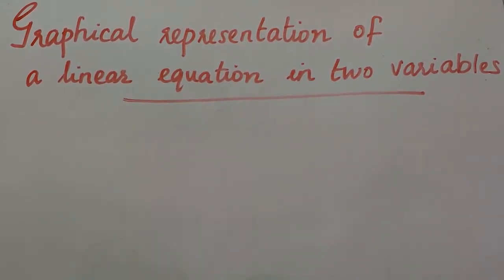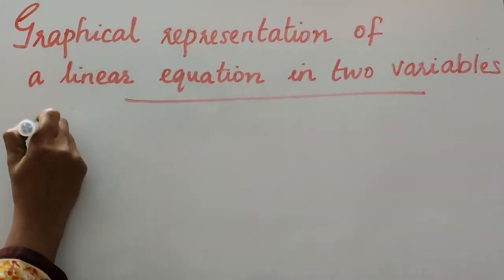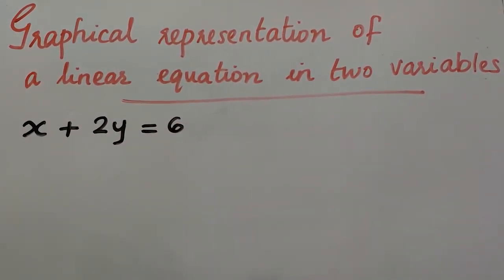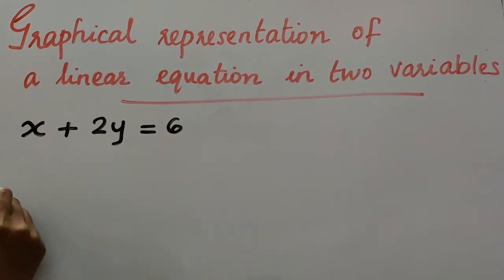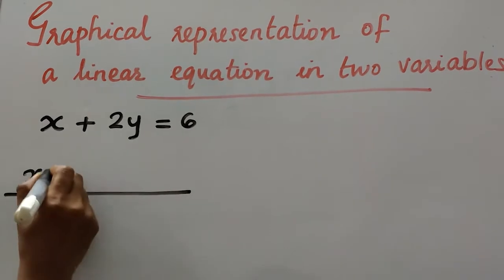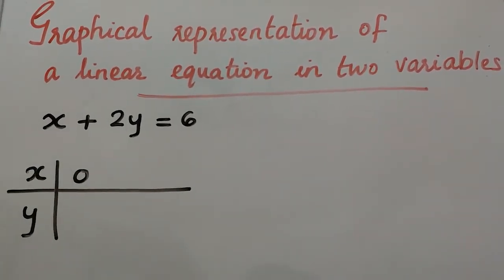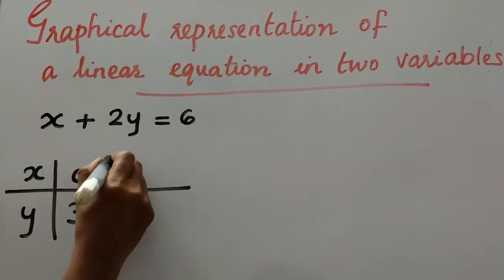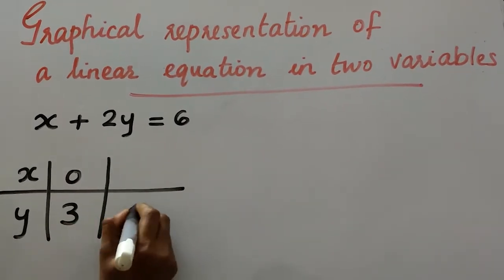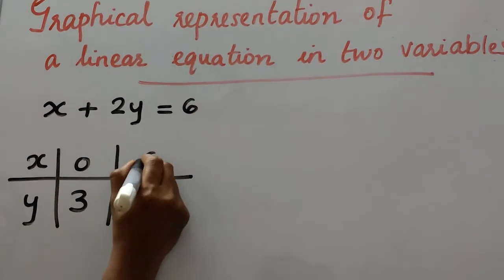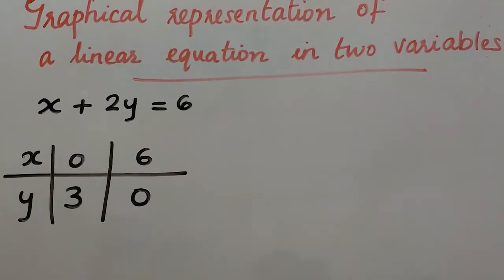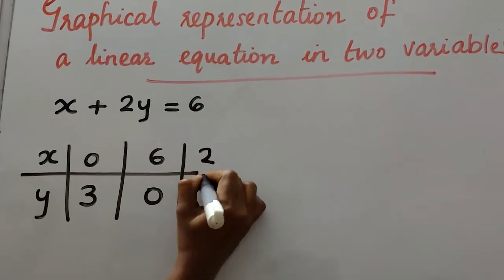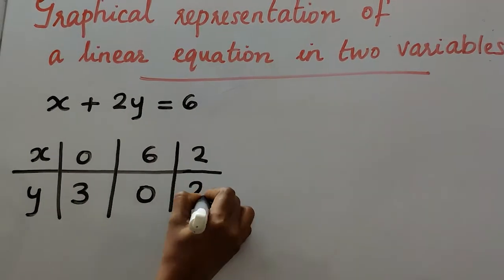Let's take one example. x plus 2y equals 6. First I am substituting the value of x as 0. That means 2y equals 6 or y will be 3. Next I am going to substitute the value of y as 0, that means x will be 6. Next, if I substitute the value of x as 2, then the value of y also will be 2.